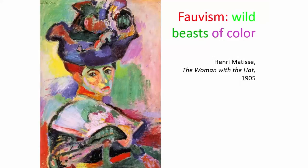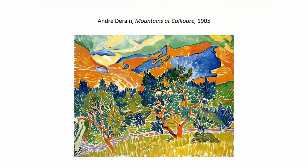Another example of fauvism is Henri de Rennes' Mountains, which has these loose brush strokes of colour directly from the tubes and uses very, very vivid colours. It really is about colour and shape and those lines that the strokes make, rather than meant to look like a realistic landscape.